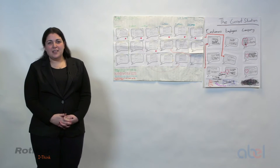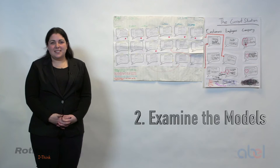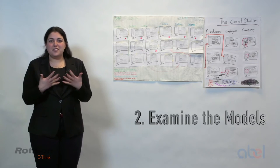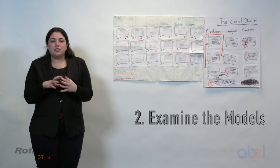Step two of the integrative thinking process is examine the models. And this is fundamentally a sense-making task. It's once I have the benefits in front of me, what do I understand now? What is something new, a new insight that I have that I didn't have before?